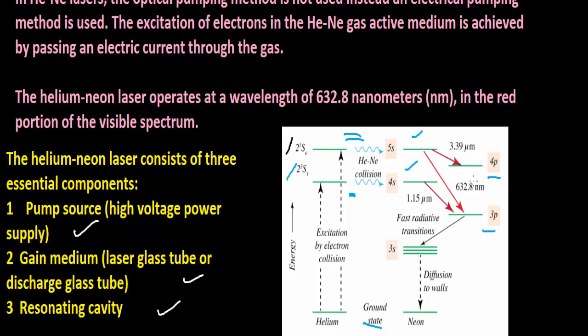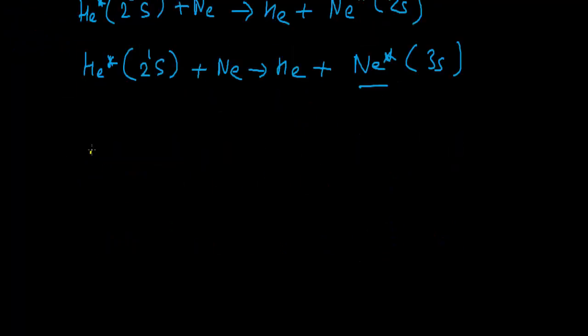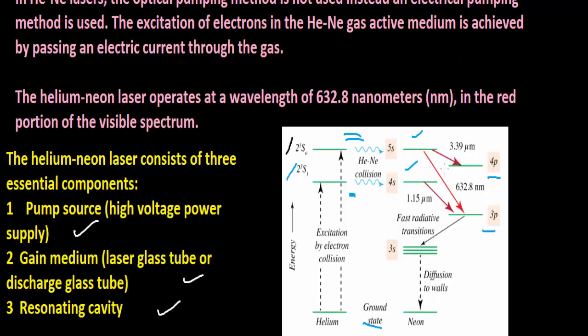After achieving population inversion, one or two photons emit spontaneously, and it triggers stimulated emission and produces three types of lasing actions. One is 3s goes to 3p, then 3s goes to 2p, and 2s goes to 2p. These are three arrows that represent the transitions.